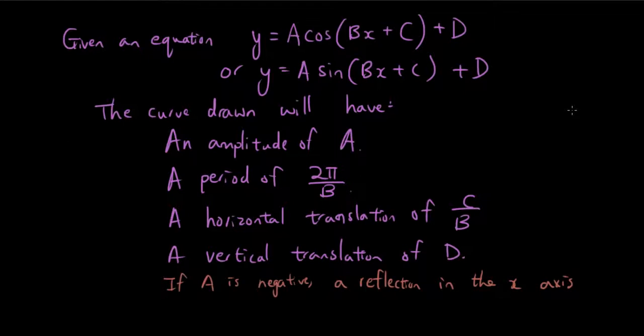This is where we got up to last lesson. We gave you a general formula for all periodic waves. If you have an equation in this form, y equals a times a periodic function of b times x plus c bracket plus d, then a will be the amplitude, 2π over b will be the period, c divided by b will be the horizontal translation, and d will be the vertical translation.